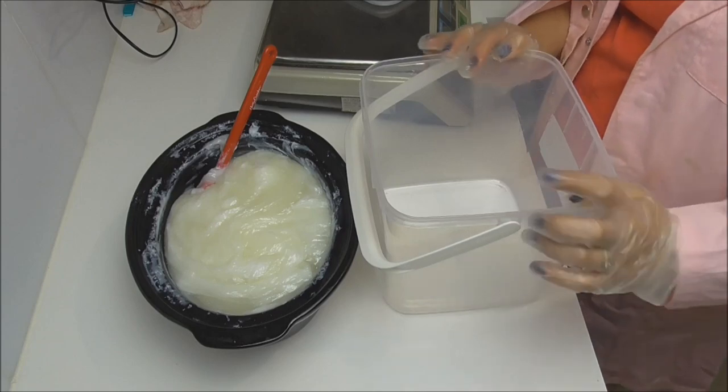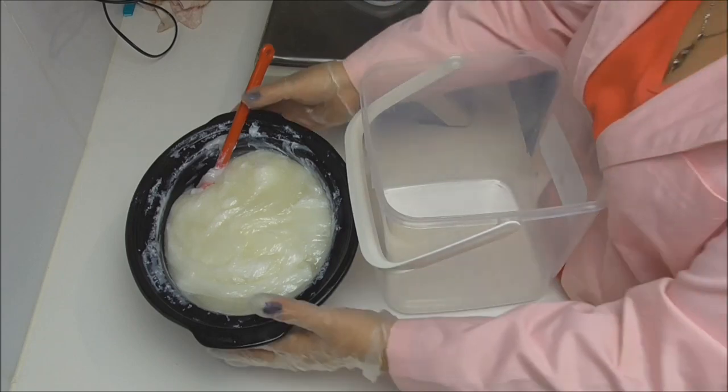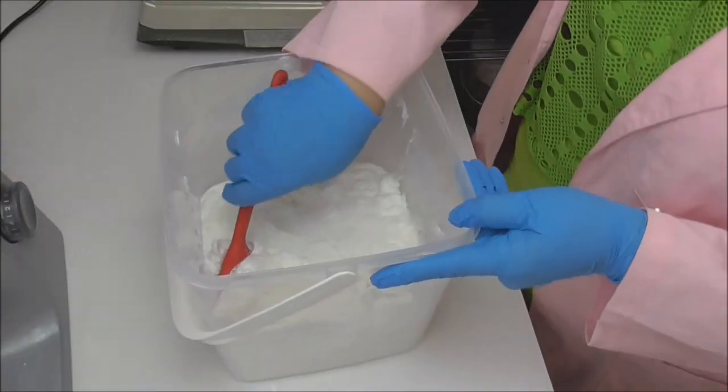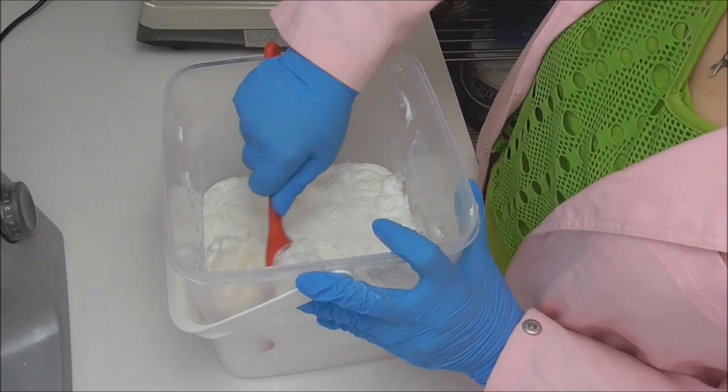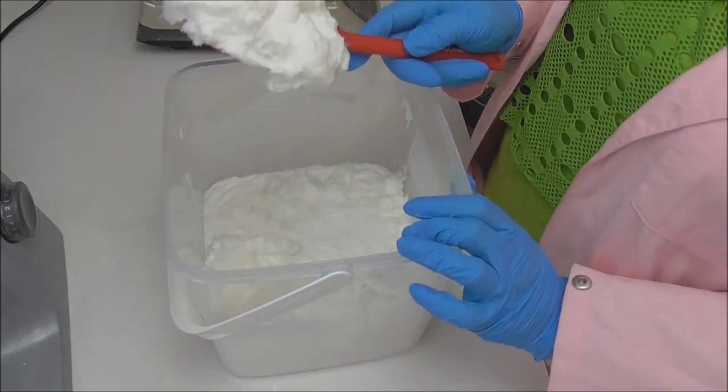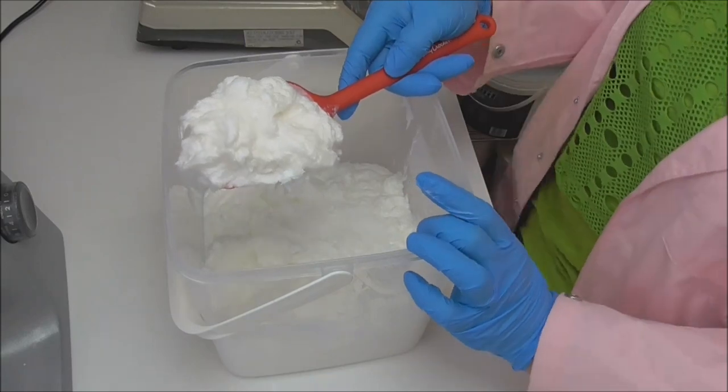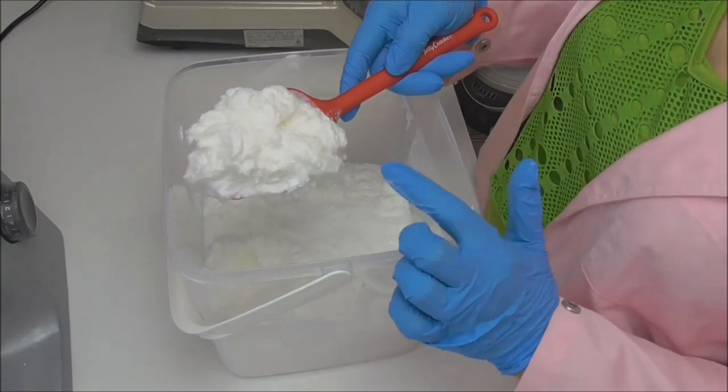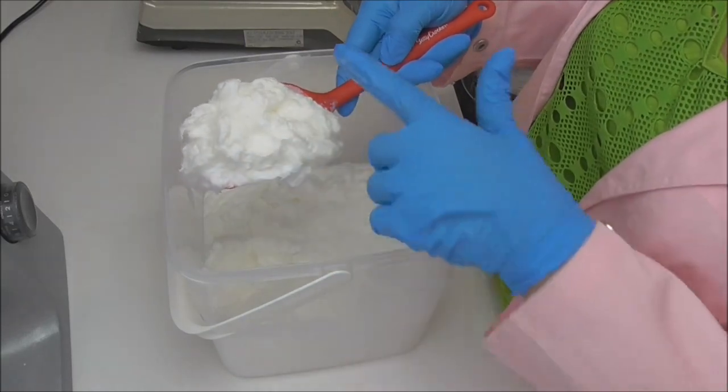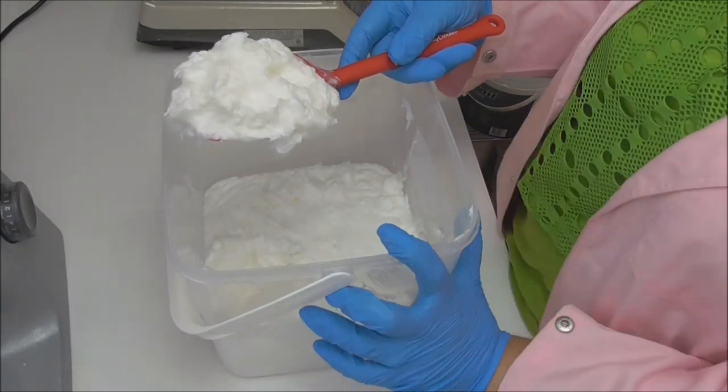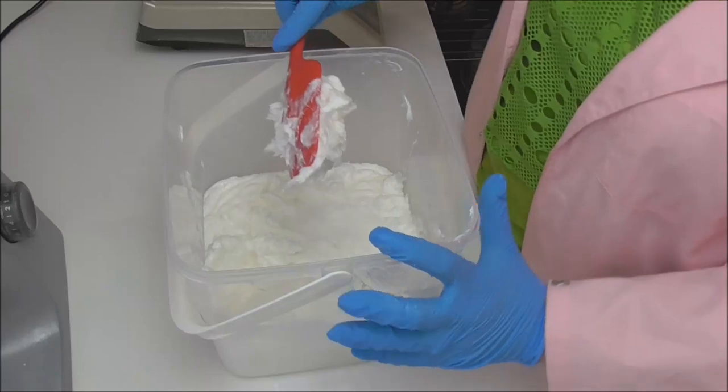So this has been cooling and settling overnight and you can see we have a very white and it's quite pearlescent creamy base. It's quite solid but also quite soft at the same time and this is the base that I'm now going to use to make the foaming sugar scrub. So let's go make some.